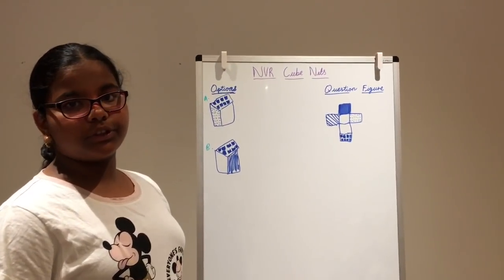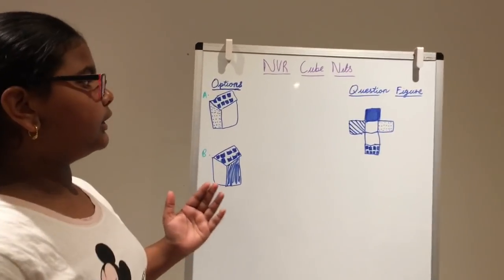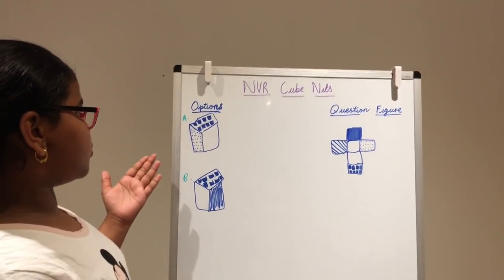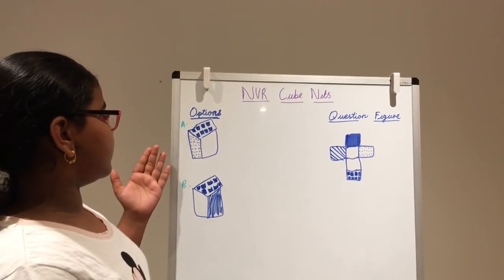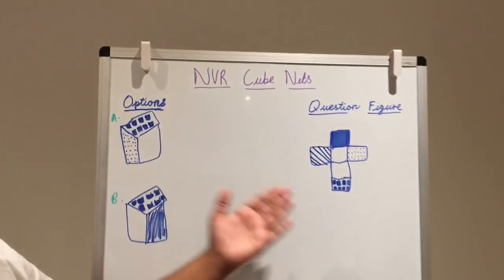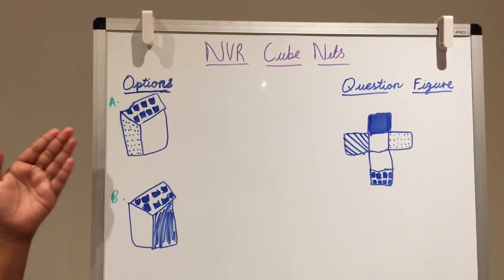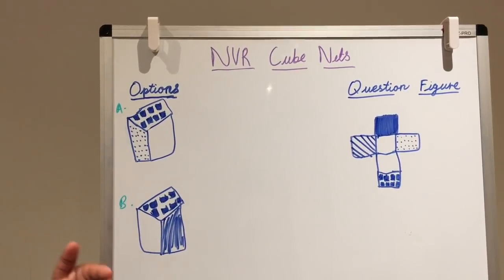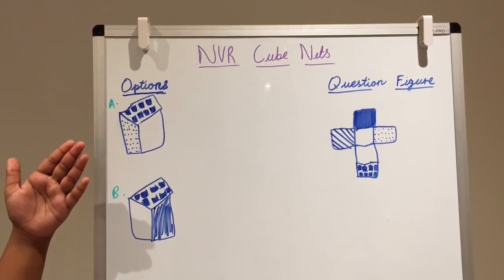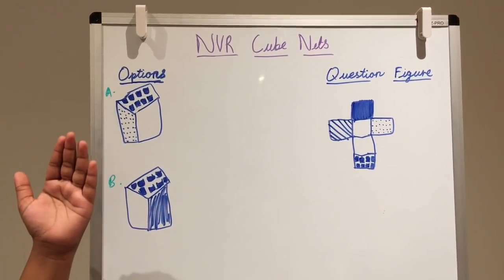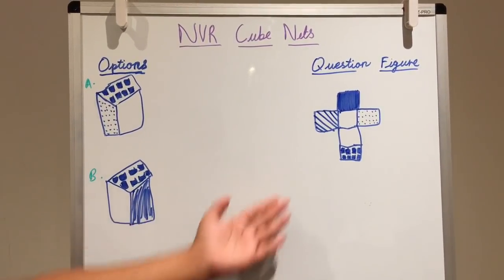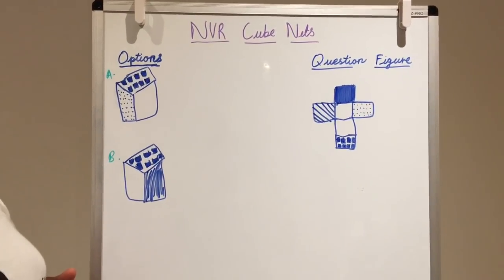Now, let's move on to the next question. In this question, we have a question figure, which is a cube net, and in the options, we have two cubes. In this question, you need to imagine to open up this cube to create the question figure. And we need to choose from option A and B. Now, let's try to visualize which of these two options will it be to create such a net, which is given in the question figure.